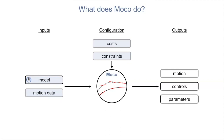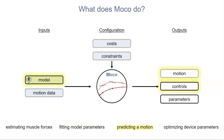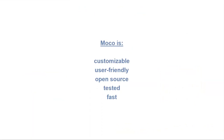With these elements, we can pose a variety of problems. We like to think of four big classes: estimating muscle forces that produce an observed motion; estimating values of model parameters such as muscle strengths; predicting a new motion without using data, as in Jessica Allen's standing balance problem; and seeking optimal parameters on an assistive device to achieve a desired objective, such as running as fast as possible. MoCo can handle this huge range of problems.